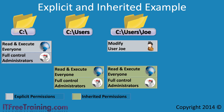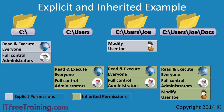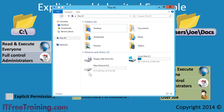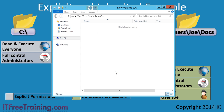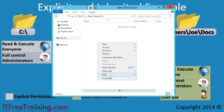If the user Joe was to create a subfolder called Docs, notice that when this folder is created, it will inherit the permissions from the previous folder. You can start to see how explicit permissions and inherited permissions can be used together. To have a look at how you would achieve something like this in Windows, I will now open Windows Explorer.